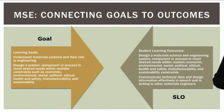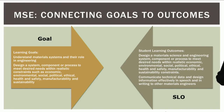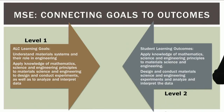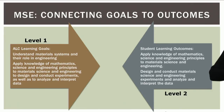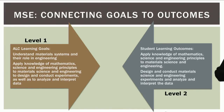Let's connect these goals to outcomes. The learning goal on the left — 'to understand material systems and their role in engineering and to design a system, component, or process to meet desired needs within realistic constraints' — aligns with the SLOs on the right. Level one is the goal level; level two is the outcome level. 'Understanding material systems' and 'applying knowledge of mathematics' at the learning goal level lines up perfectly with the SLOs: 'apply knowledge of mathematics, science, and engineering principles to material science and engineering,' and 'design and conduct material science and engineering experiments and analyze and interpret the data.'